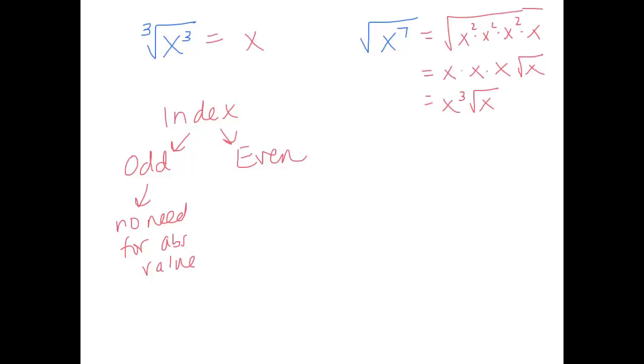If the radicand could be positive, then we're going to get a real answer. Well, it's positive if the exponent is even. So I'm going to say if the index is even, the exponent is even, or if the exponent is odd. We just said if the index is even, the exponent is odd, no need for absolute value.